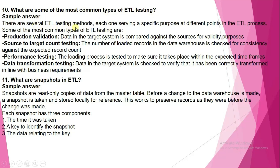What are some of the most common types of ETL testing? There are several ETL testing methods, each serving a specific purpose at different points in the ETL process. The most common types are: production validation, where data in the target system is compared against sources; source-to-target count testing, where the number of loaded records is checked for consistency against the expected record count; performance testing, where the loading process is tested to ensure it takes place within expected time frames; and data transformation testing, where data in the target system is verified to have been correctly transformed in line with business requirements.